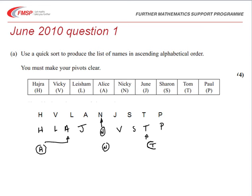N is fixed and T is going to be fixed. Repeating the procedure, those that are after A and before N are H, L and J without changing the order. And after N we've got S and P before T, and V after it.